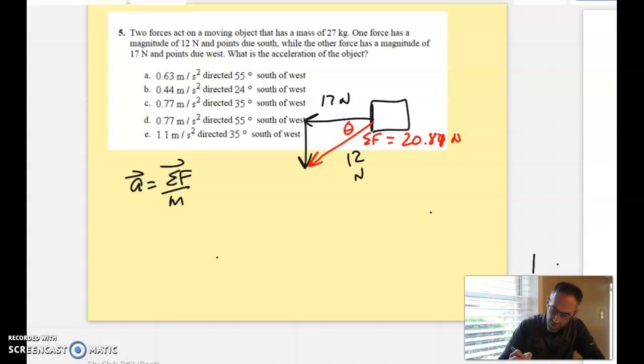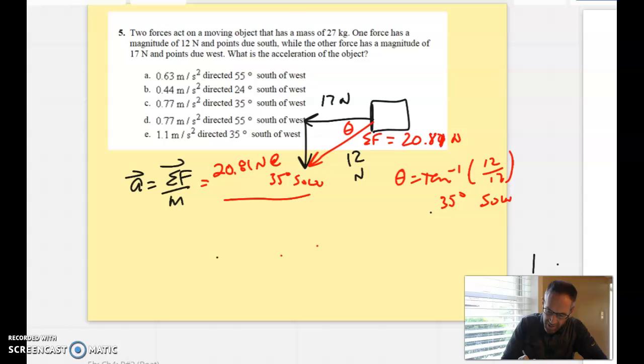And now this angle right here is going to be an inverse tan of 12 by 17, which is going to be 35 degrees south and west. Now all that I have to do to finish this one off is take that net force, 20.81 newtons at 35 degrees southwest and divide it by the mass of 27 kilograms.